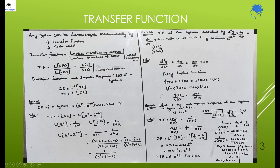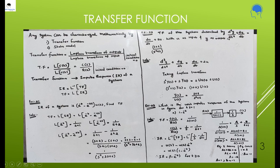The Laplace transform of d²y/dt² is s²Y(s), and dy/dt becomes sY(s). For the right side, du/dt becomes sU(s) and 2u becomes 2U(s). Taking Y(s) common gives s²+s, and taking U(s) common gives s+2. The transfer function is Y(s) by U(s), so rearranging gives Y(s)/U(s) = (s+2)/(s²+s), which is the transfer function.